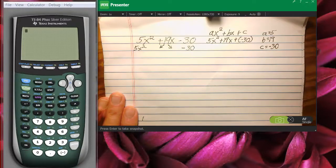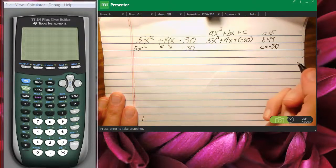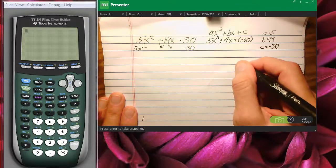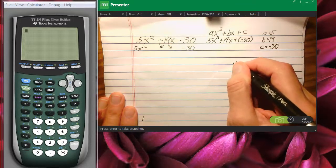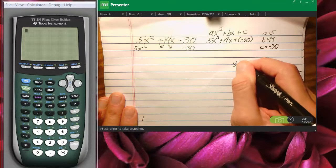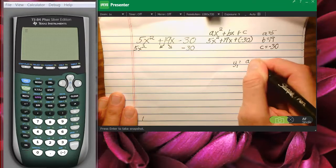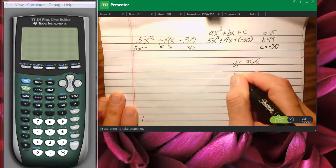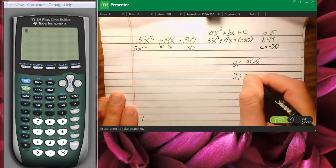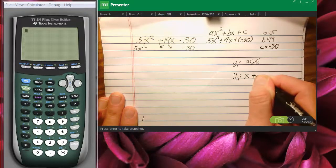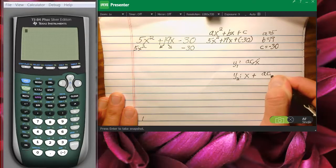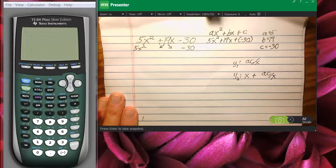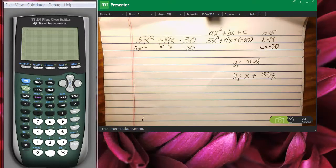Now that we have those numbers a, b, and c, this is what we're going to do. I'm going to go to y equals, and I'm going to write the following. y1 is a times c over x, and y2 is x plus a times c over x. Now, that's our formula for what we're about to do.